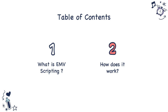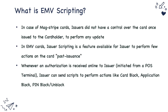In case of magnetic stripe cards, once the issuer issues the card to the cardholder, the issuer does not have an opportunity to update the data on the magnetic stripe. Whereas in case of EMV cards, the issuer does have a feature to update the data on the card, or to perform certain actions on the card or the application, post issuance of that card.